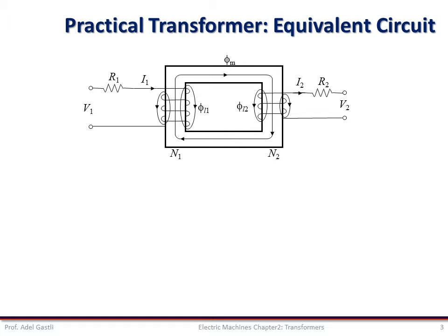So we can represent the practical transformer as an ideal transformer to which we add the primary and secondary winding resistances R1 and R2, and the leakage fluxes phi L1 and phi L2, as shown in this figure.